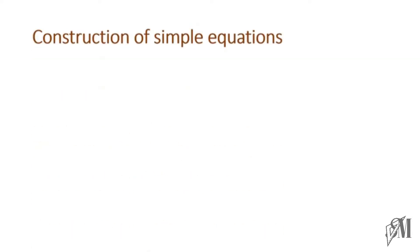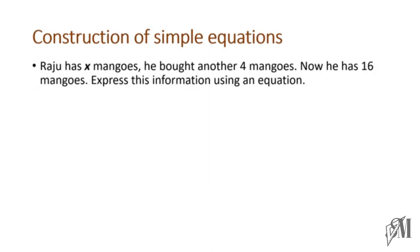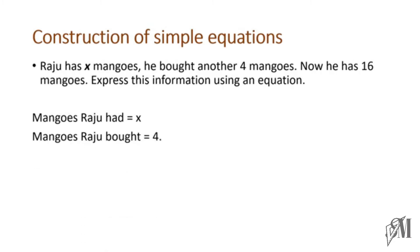Look at this statement: Raju has x mangoes and he bought another four mangoes; now he has 16 mangoes. We are going to express this information using an equation. First, let us write down some statements related to this example. The number of mangoes Raju has is x, and the number of mangoes Raju bought is equal to four.